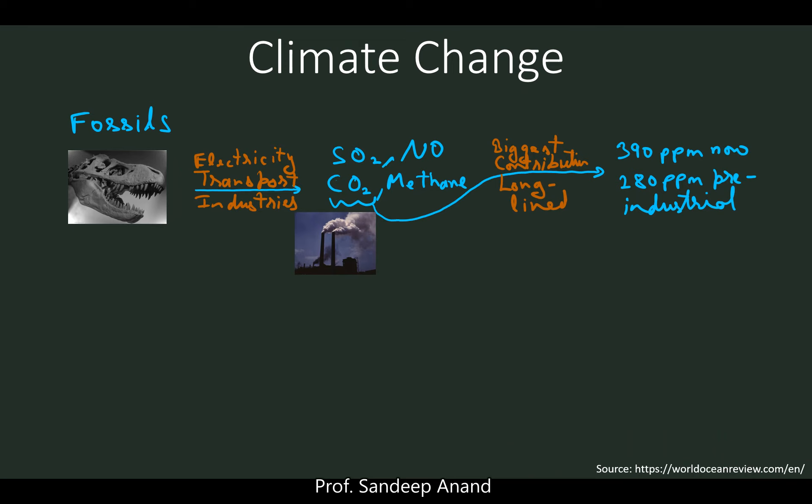In the process of these activities — powering industries, transportation, and power plants — we end up emitting gases such as sulfur dioxide, nitrogen oxides, and carbon dioxide. We already saw the harmful effects of sulfur dioxide and nitrogen oxides. Carbon dioxide is one of the major contributors to the climate change equation.